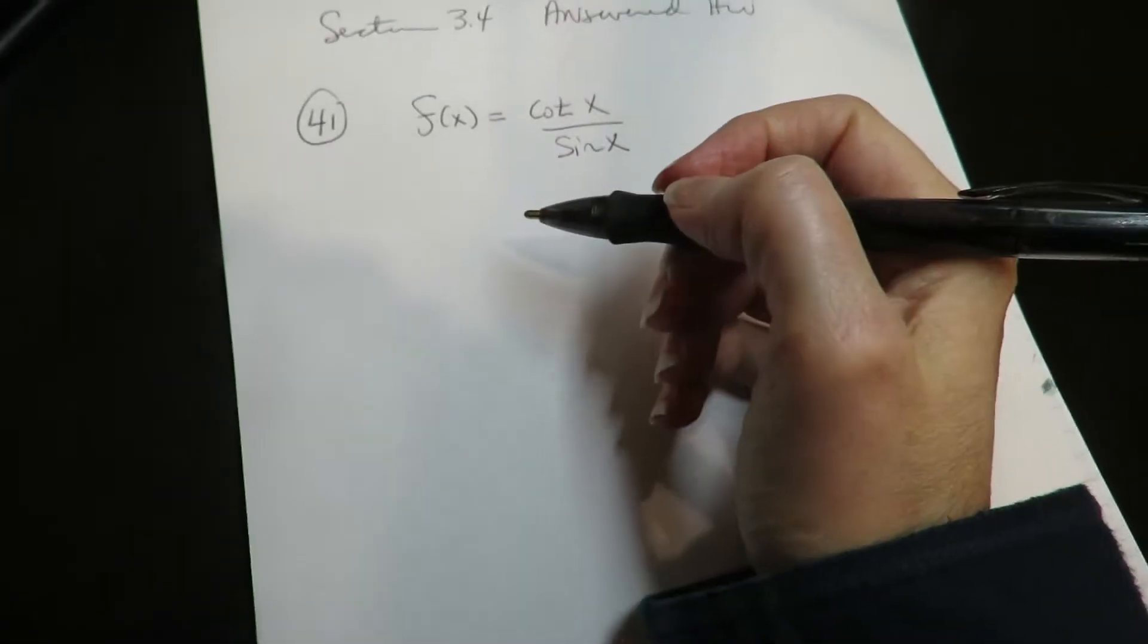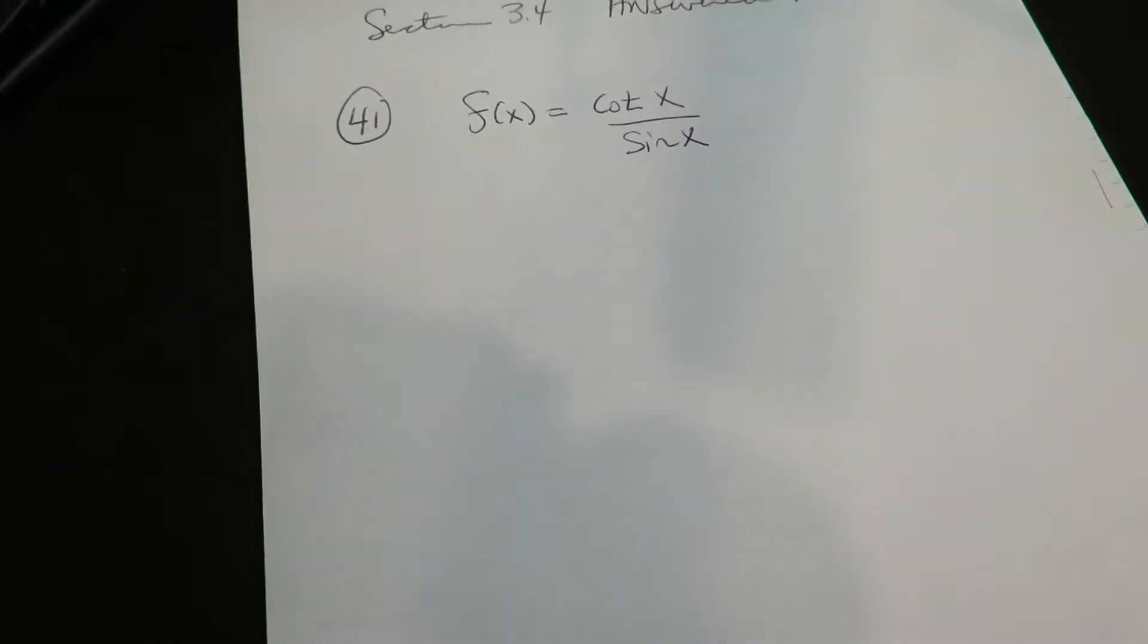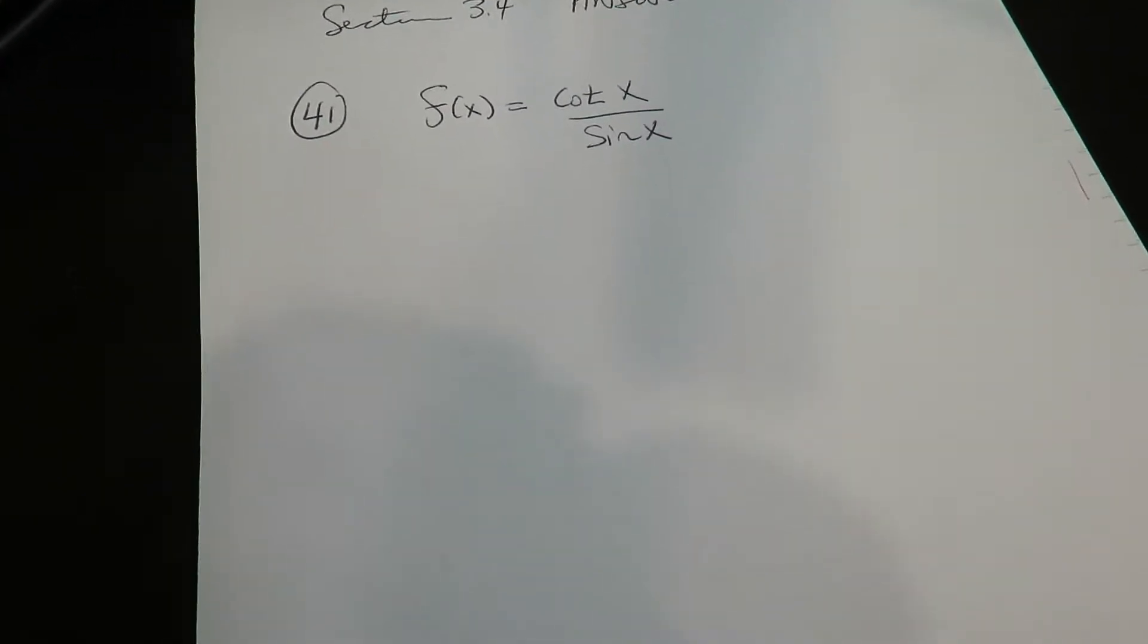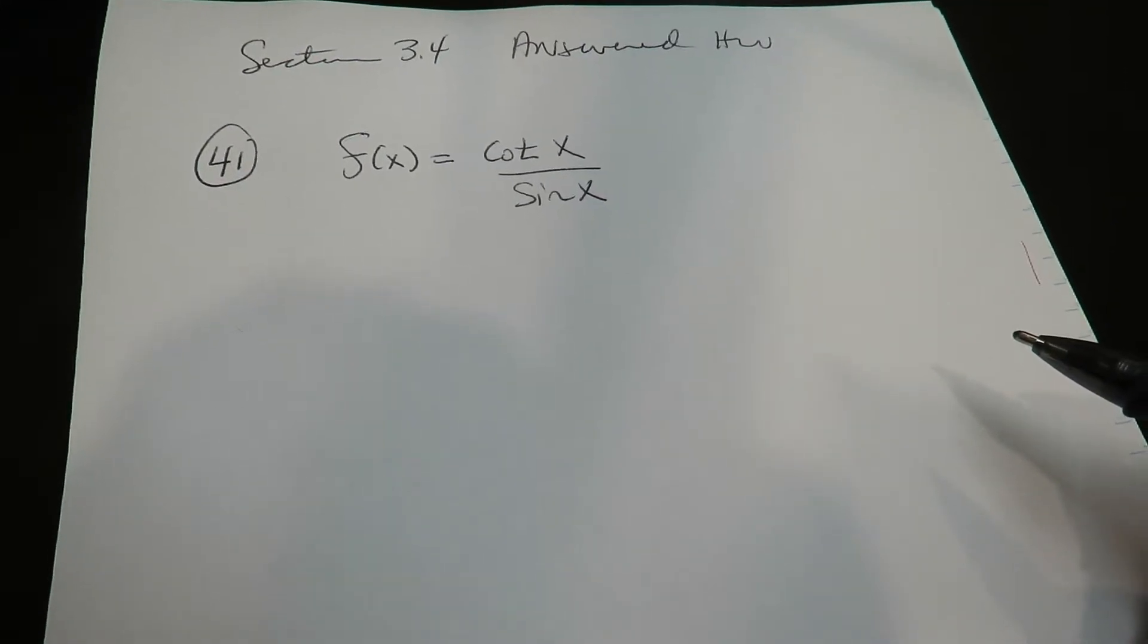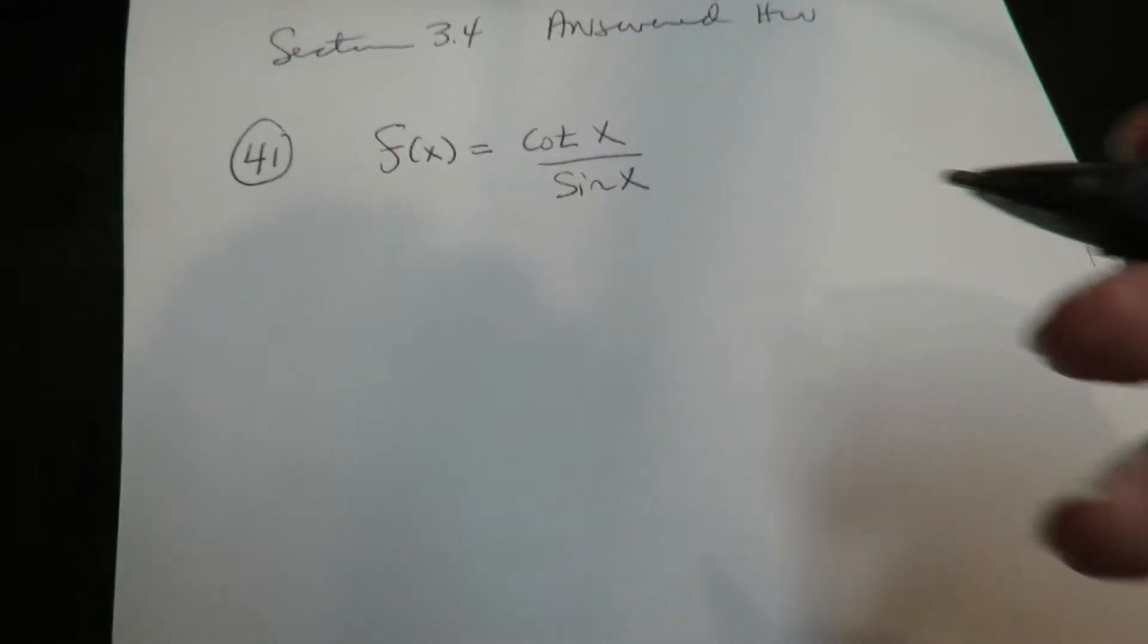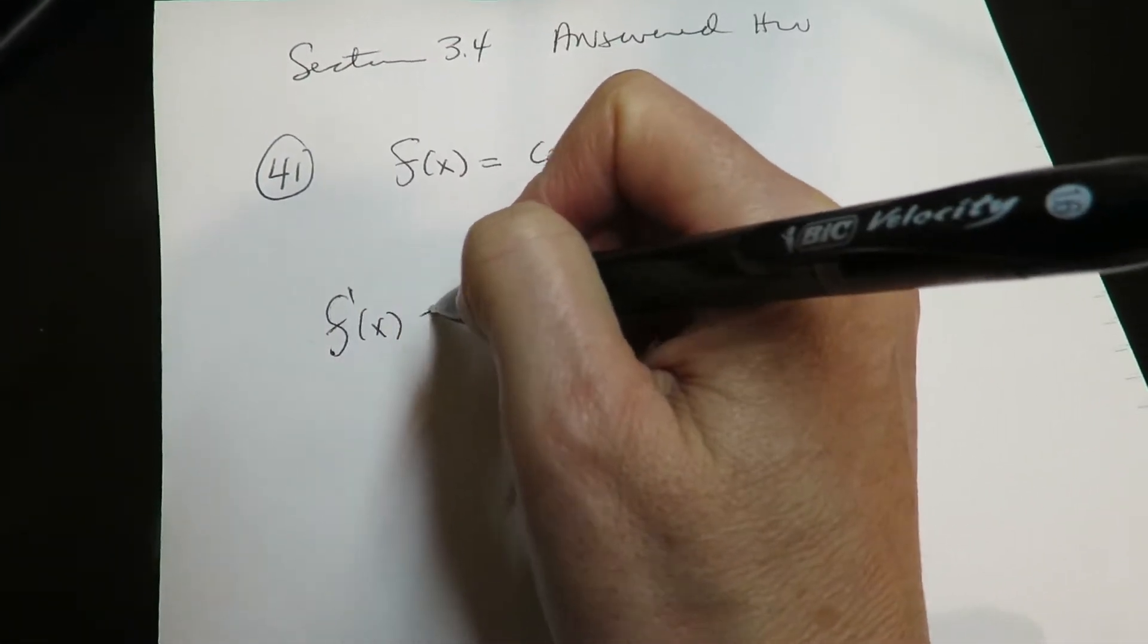Alright gang, let's try this one. Overall, this is the quotient rule. This actually isn't chain rule at all. I don't know why they threw this in here. There's no composites here.